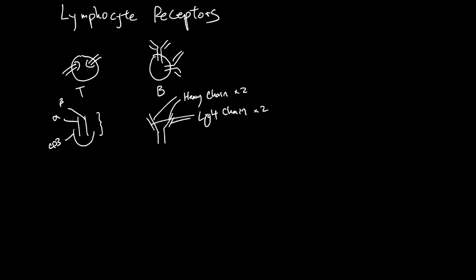The alpha beta proteins complex is very similar to the tip of a B cell receptor. And the tip here is called a variable region.